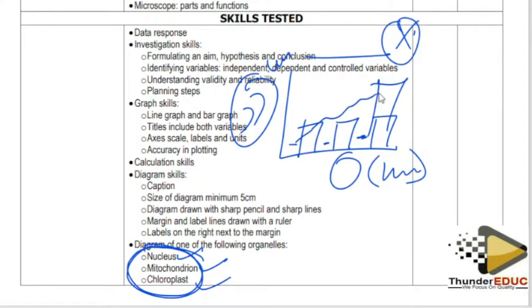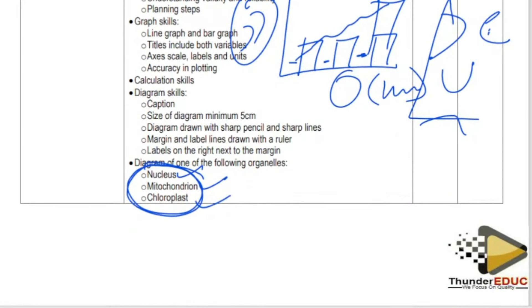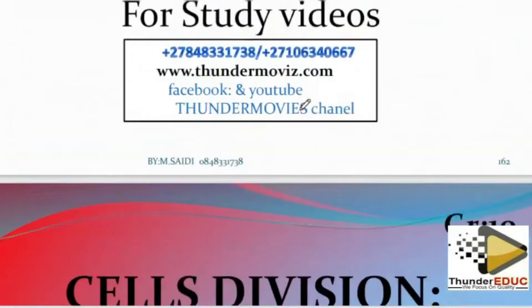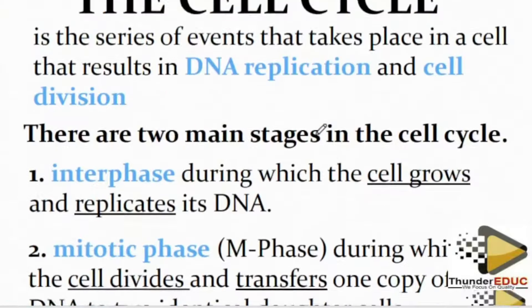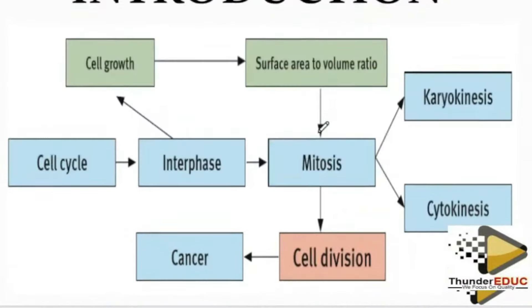For a pie chart, convert values into degrees. For a line graph, make sure it's drawn correctly with proper scale — know what valid shapes a line graph can take. Make sure you know those key points. Don't go to the paper without knowing the nucleus, mitochondrion, and chloroplast. Download the distinction material and use it. Next time we will be talking about the cell cycle or cell division.